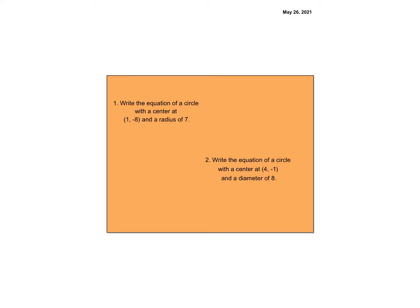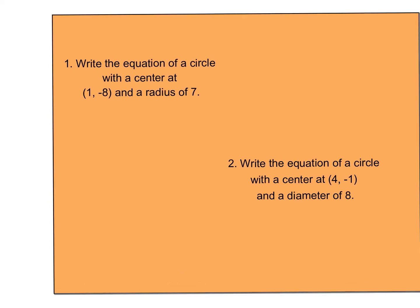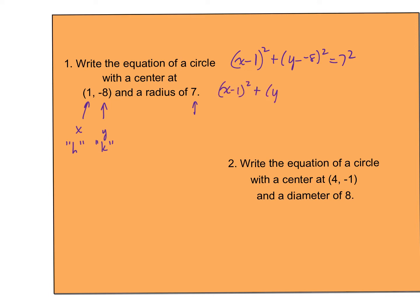So let's put this into practice. If I've got the equation of a circle with a center at (1, -8) and a radius of 7, then 1 becomes h, -8 becomes k, and my radius is 7. So my equation is: x minus 1 squared plus y minus negative 8 squared equals 7 squared. Simplifying: x minus 1 squared plus y plus 8 squared equals 49.